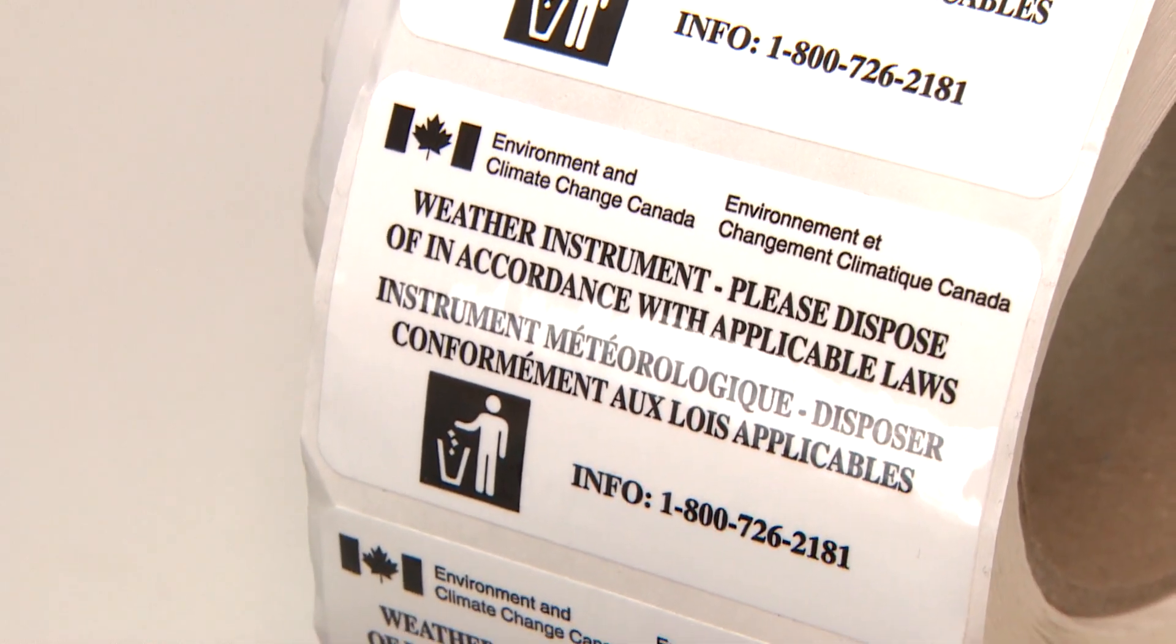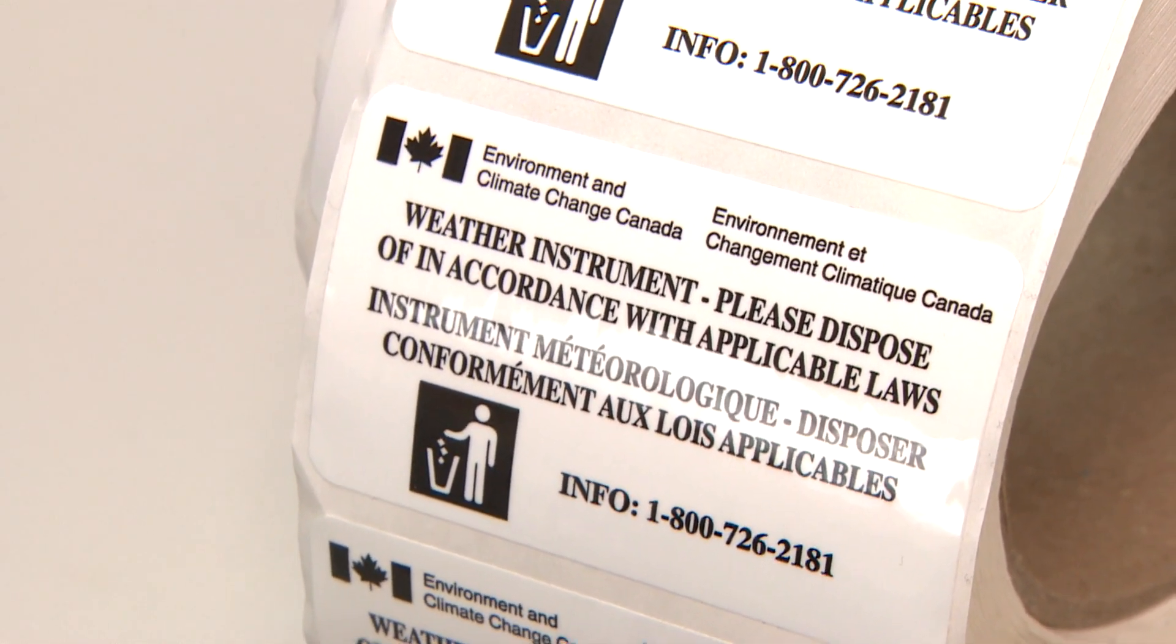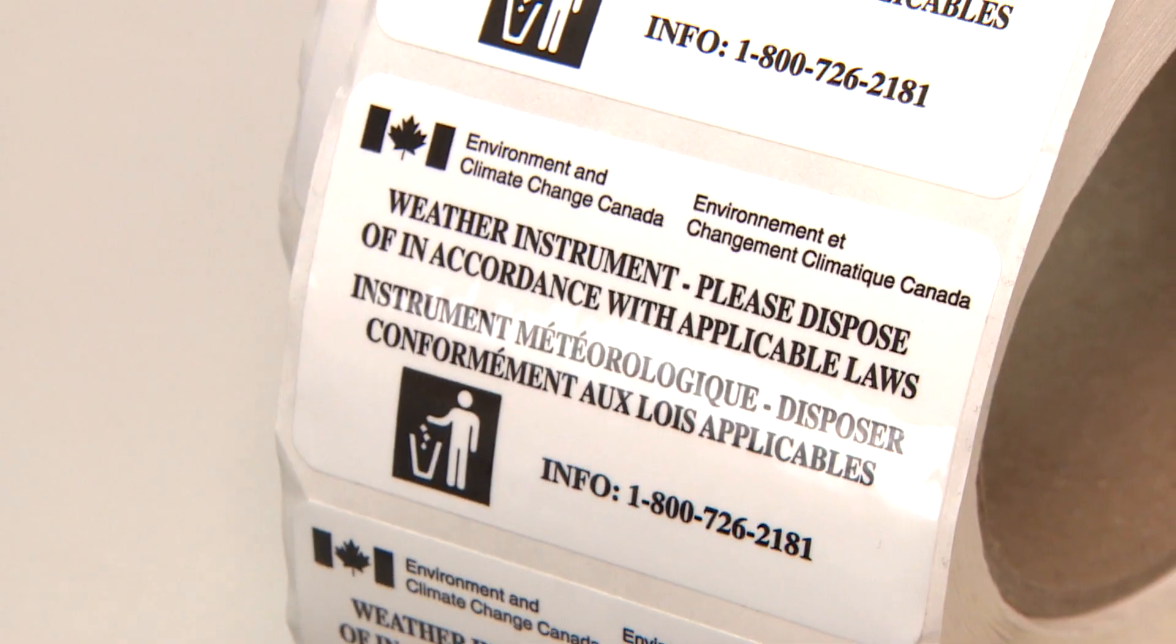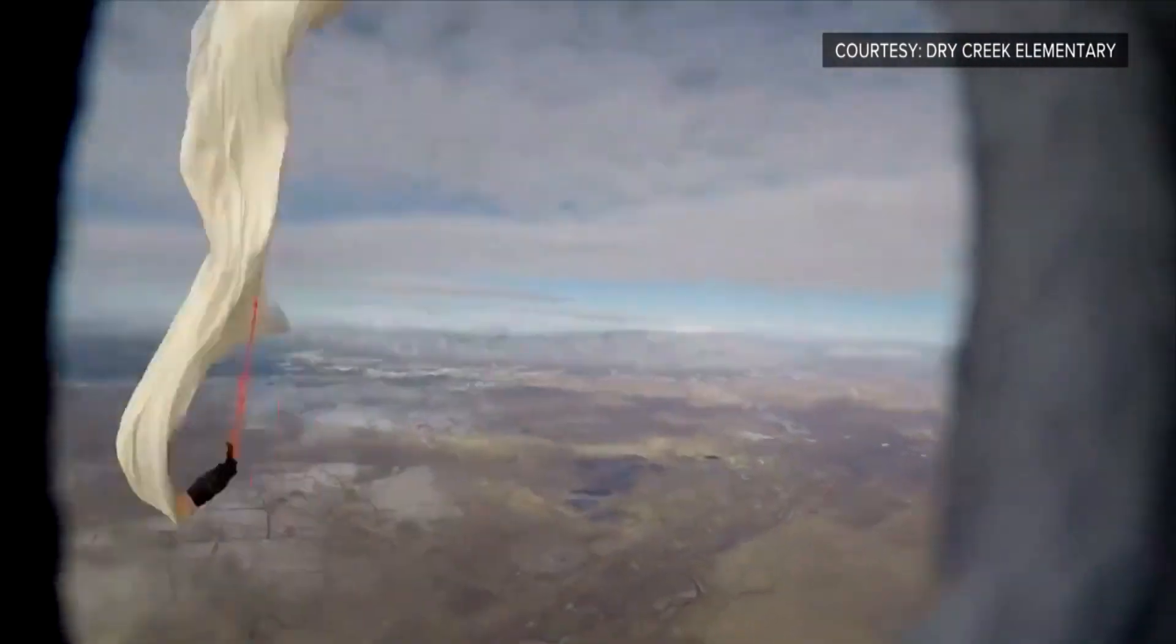And we have put stickers on them. So when you read the sticker, there's a phone number in that. So if anybody does happen to find one, they can always call the number on the sticker, which is on the radiosonde itself. And then they'll let you know how to dispose of the radiosonde, if one is found.